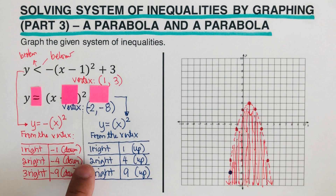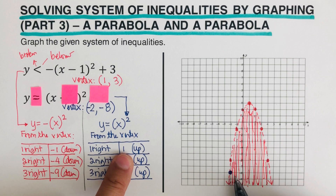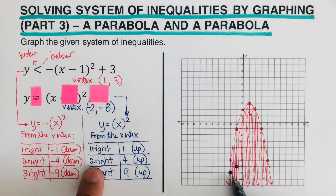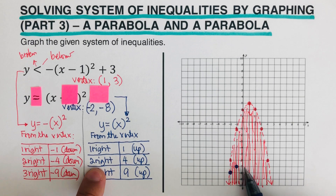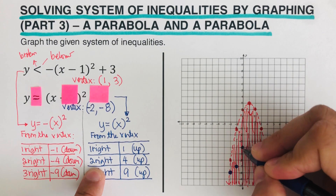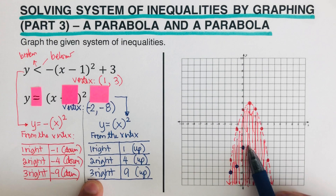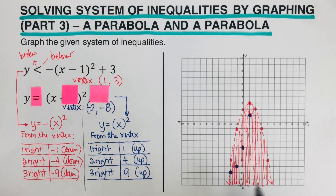We're ready to sketch the dots. From the vertex, 1 step to the right and 1 step up — that's the second dot. Then 2 steps to the right and up 4 — counting 1, 2, 3, 4. Then 3 to the right and up 9 — counting 1 through 9 — all the way up here. Then we reflect on the other side of the axis to create the full parabola.